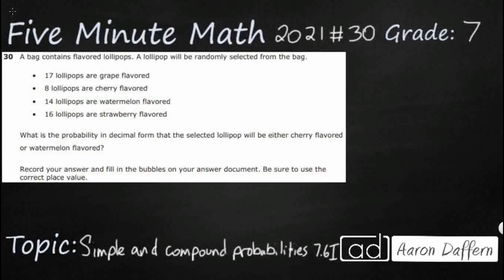So we have a bag containing flavored lollipops and a lollipop is going to be randomly selected from the bag. We've got grape, cherry, watermelon, and strawberry. So we need the probability in decimal form. You notice there's no F, G, H, or J to choose from. We are going to have to fill this in in our griddable response that the lollipop will either be cherry or watermelon.